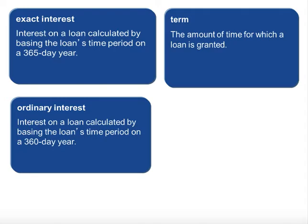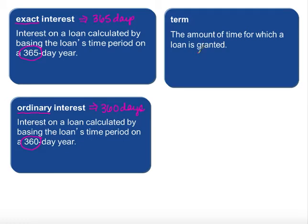We're going to use two different methods today of calculating that single payment loan: the exact interest method and the ordinary interest method. The only thing that's different about those is the time period. Exact interest will use a calendar year based off of 365 days, where ordinary interest is based off of a 360-day year. The calculations from there will be exactly the same. We're also going to talk about the term, which is the amount of time for which the loan is granted.